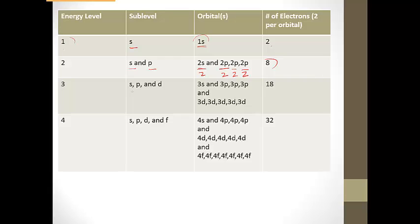The third energy level, you have s, p, and d. So we have our s, the three p orbitals, and then the five d orbitals. So if we were to take and add the two electrons in each one of these, we would get 18. And then, again, for the fourth energy level, we're adding all of these seven f shapes. So we up our number of electrons.